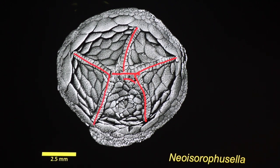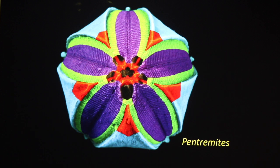The hydropore and gonopore and the anal opening both lie in the CD interambulacrum. In other echinoderms, such as this blastoid pentromites, the 2-1-2 symmetry has been greatly reduced to create what's known as pseudo-five-fold symmetry. Note, however, that the mouth, shown in black, still retains some bilateral symmetry, being wider than it is high.